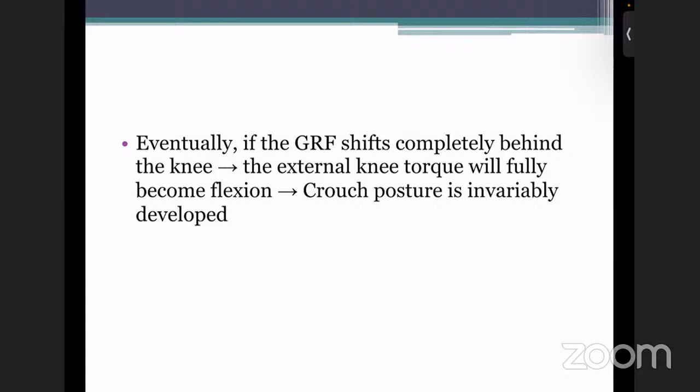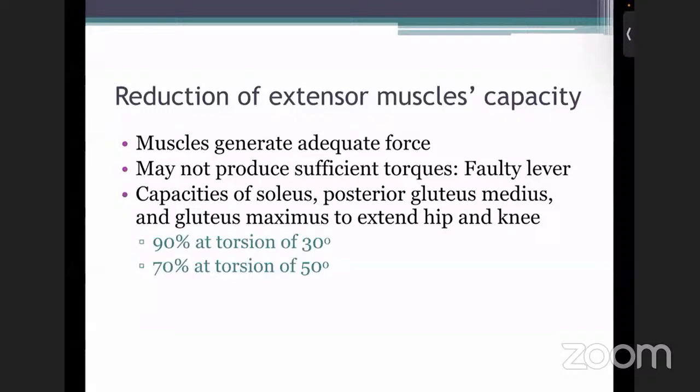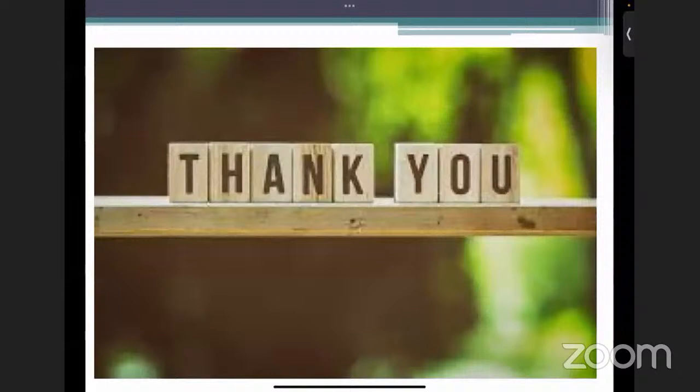A second mechanism is the reduction of muscle capacity with torsion. While muscles in CP can generate adequate force, they may not produce sufficient torque due to the faulty lever. The capacity of the soleus, posterior gluteus medius, and gluteus maximus to extend the hip and knee reduces by 90% at a torsion of 30 degrees and by 70% at a torsion of 50 degrees.